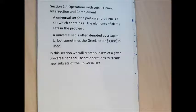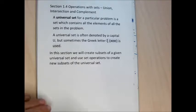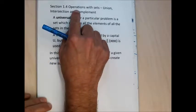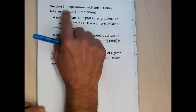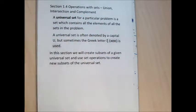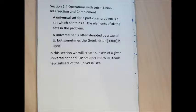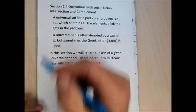This is going to be kind of halfway through Chapter 1. There are seven sections in Chapter 1, and all of them deal with sets. Section 1.4 is dealing with operations with sets, which are unions, intersections, and complements. It's going to take one set or multiple sets and create new sets from those sets. Most every problem in this section is going to refer to something called a universal set.